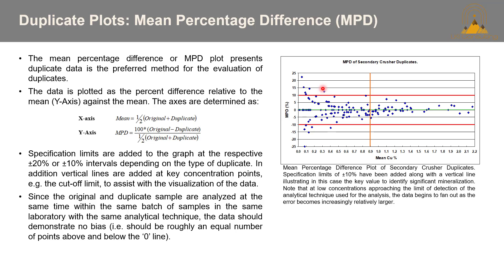Note that at low concentrations approaching the limit of detection, the data begins to fan out as the error becomes increasingly relatively larger. Because we're approaching zero here — closer to the detection limit — these data points will always look a little unusual because the equation falls over on itself at low limits of detection. Anything above the lower limit of detection will plot just fine, and you can see that at higher concentrations the samples plot within plus or minus 10% MPD.